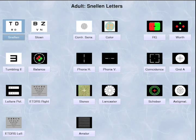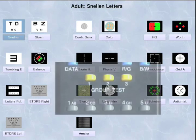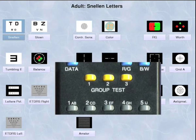In the test window, press the test key in order to access it. The eye chart tests are situated on the left columns, which corresponds to the group test 1 yellow key.